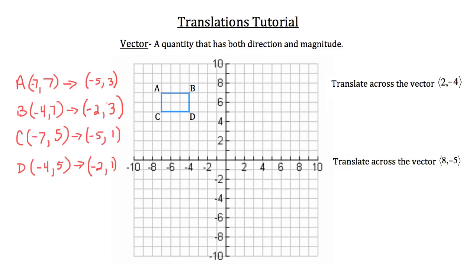I'm going to plot those four points now. A is at (-5, 3), so we go 5 to the left and 3 up. B is at (-2, 3), so 2 to the left and 3 up. C is at (-5, 1), so 5 to the left and 1 up. And D is at (-2, 1), so 2 to the left and 1 up. Now I'll connect them with lines and you'll see the new rectangle A'B'C'D'. Each point has been translated 2 to the right and 4 down.